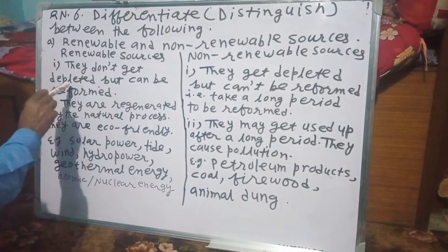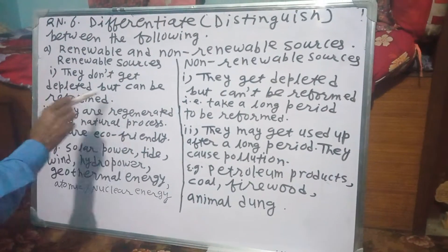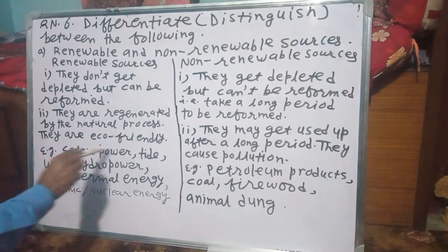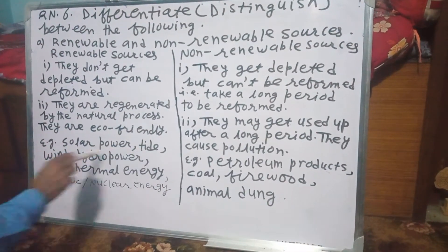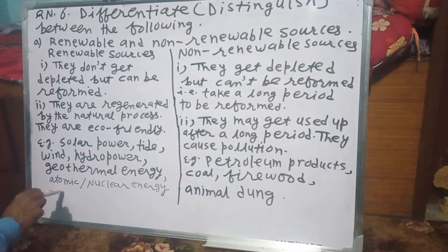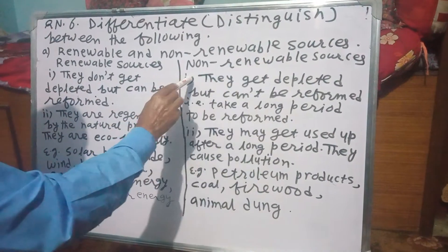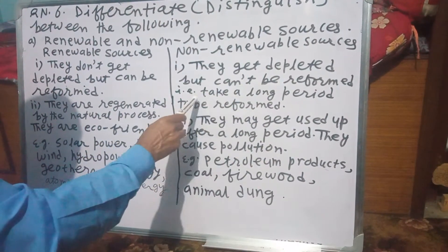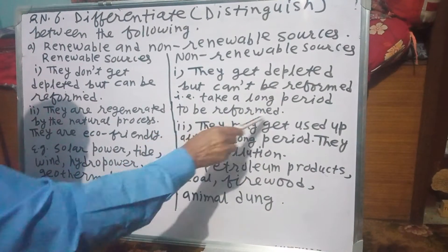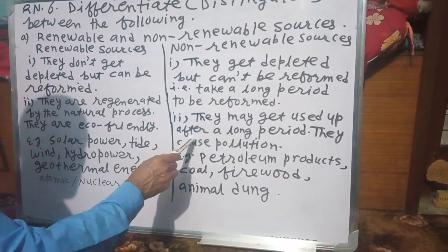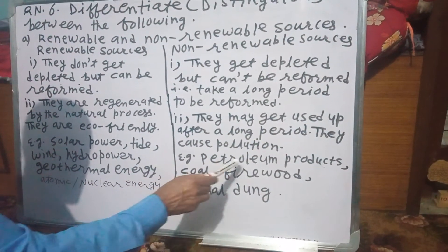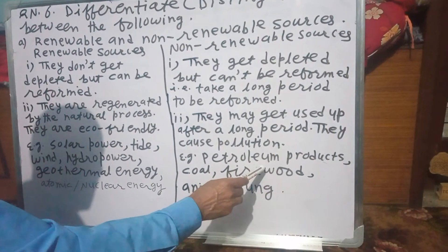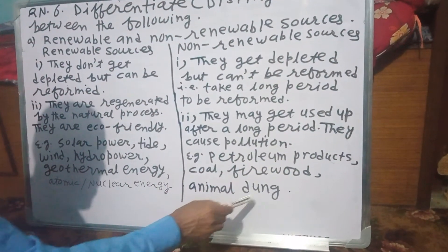Question number six: Differentiate between renewable and non-renewable sources. Renewable sources: they don't get depleted but can be reformed; they are regenerated by natural processes; they are eco-friendly, causing no pollution. Examples: solar power, tide, wind, hydropower, geothermal energy, atomic or nuclear energy. Non-renewable sources: they get depleted and can't be reformed — they take a long period to reform; they may get used up; they cause pollution. Examples: petroleum products like kerosene, diesel, firewood, animal dung, grass, etc.